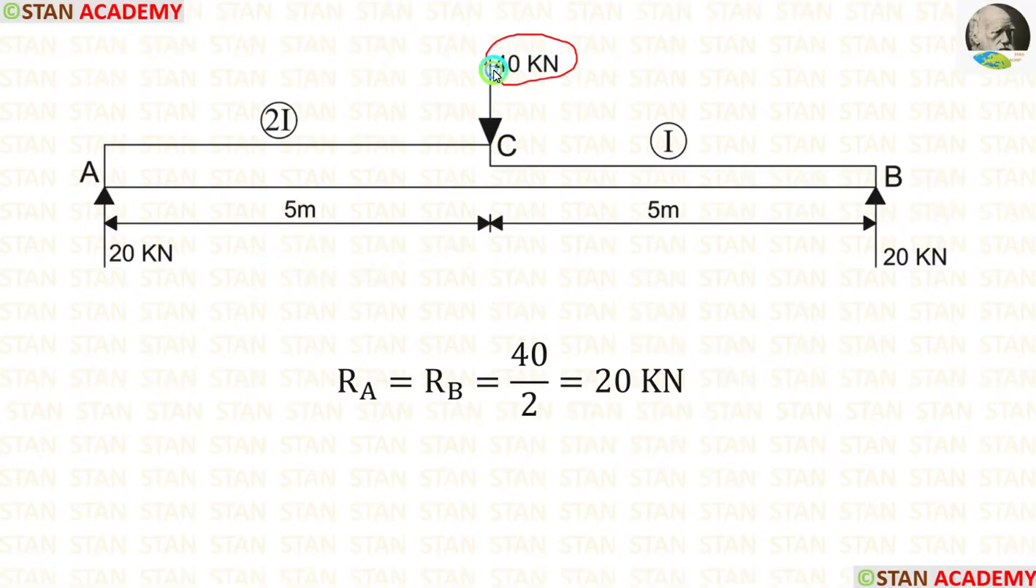Under the point load, 40 kN, let us make a point, that is point C. Now, let us calculate the reactions. In this beam, we are having symmetrical loading condition. The point load is acting on the center. So, we can easily calculate the reactions Ra and Rb. The total load divided by 2, we are getting 20 kN for Ra and Rb.